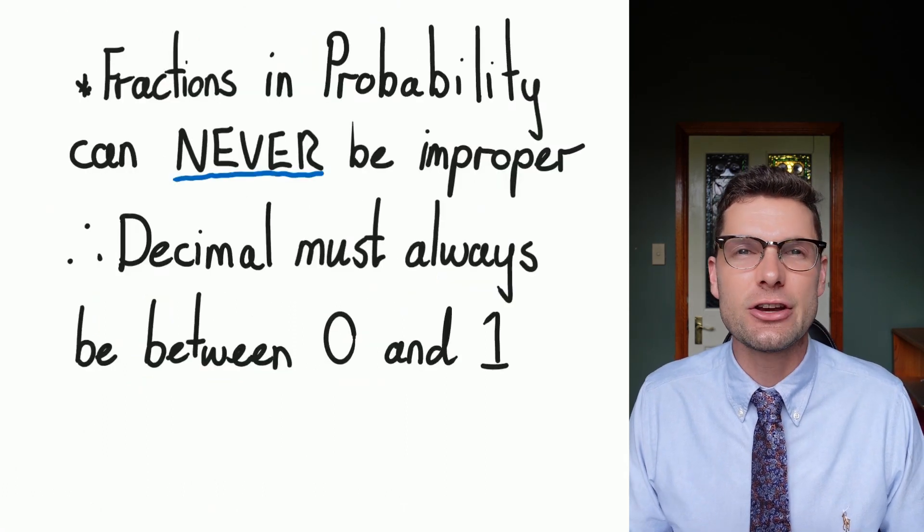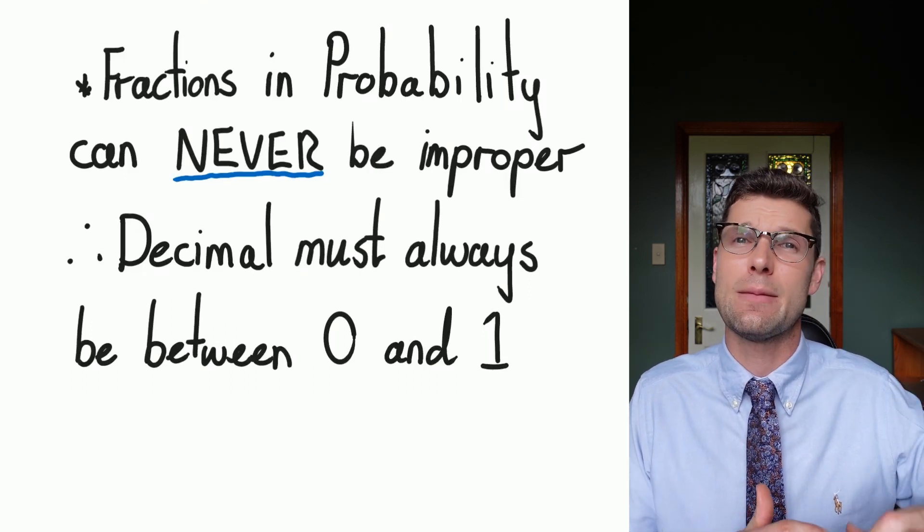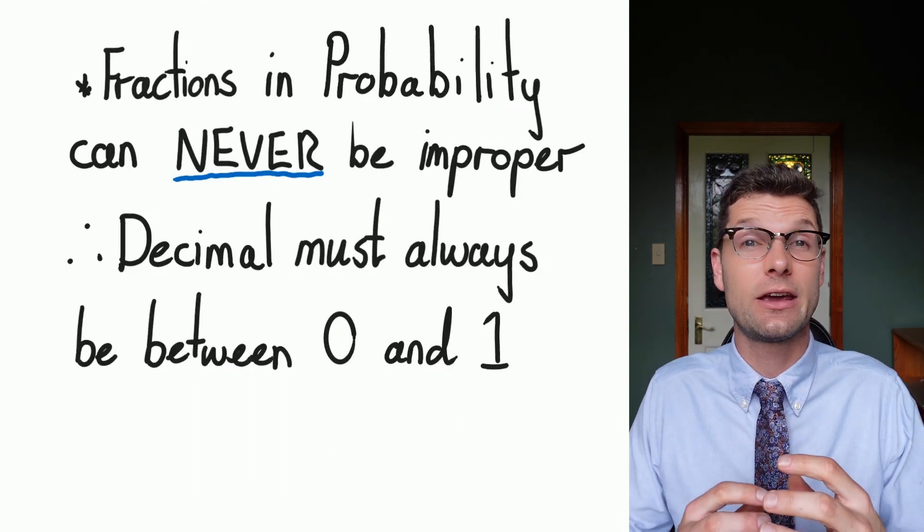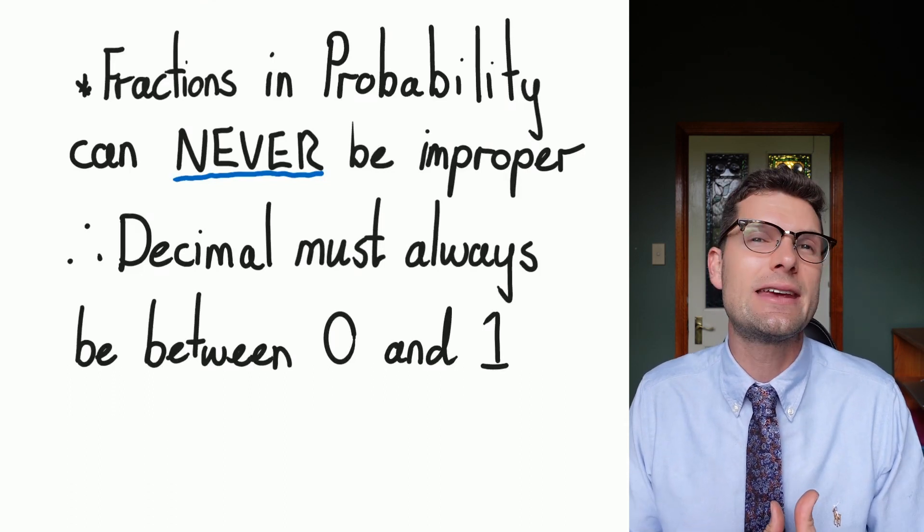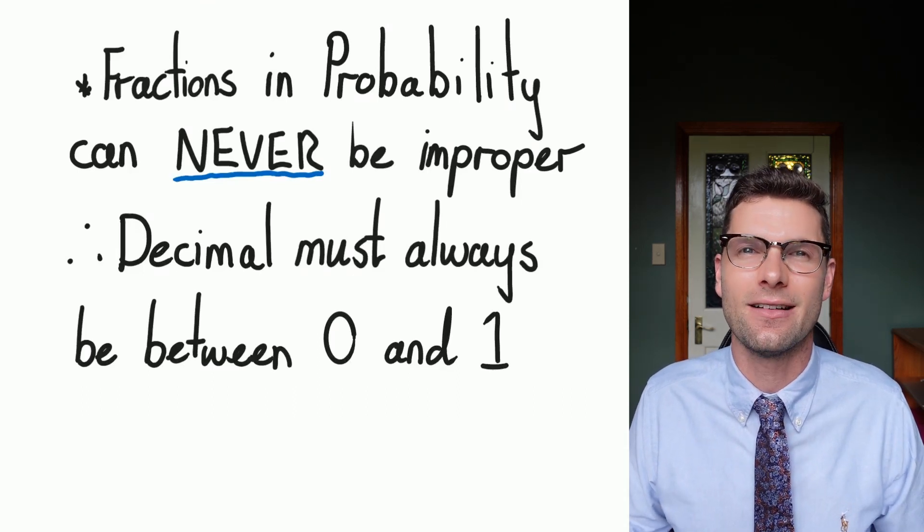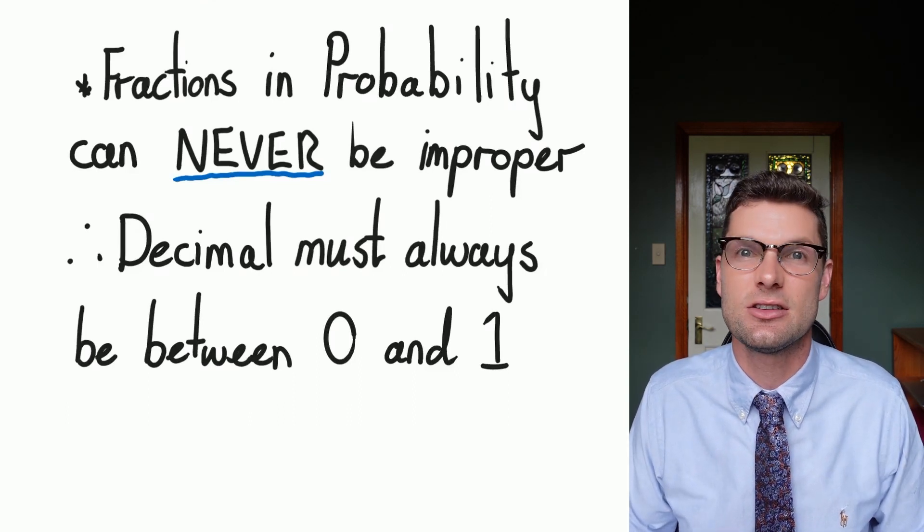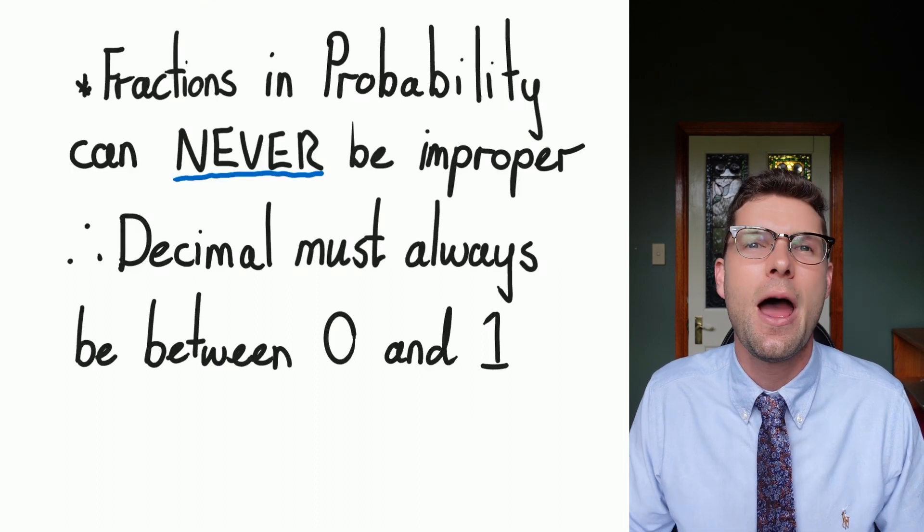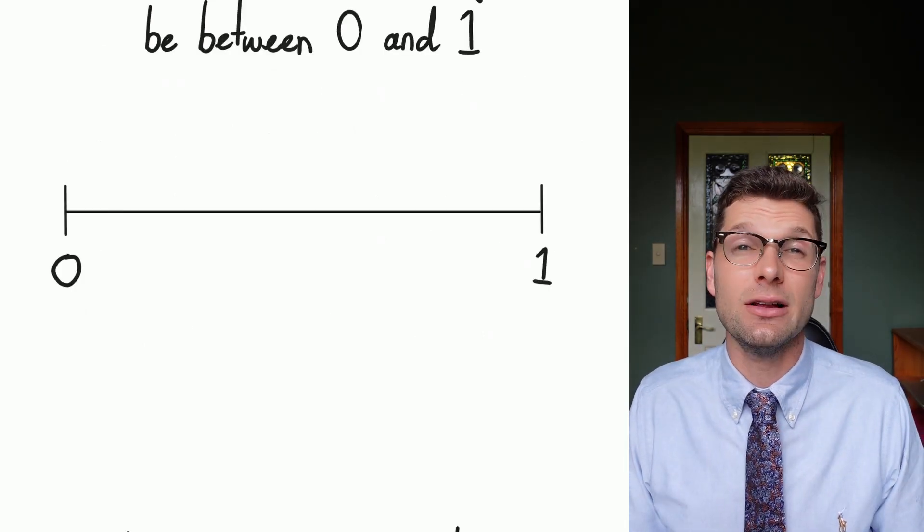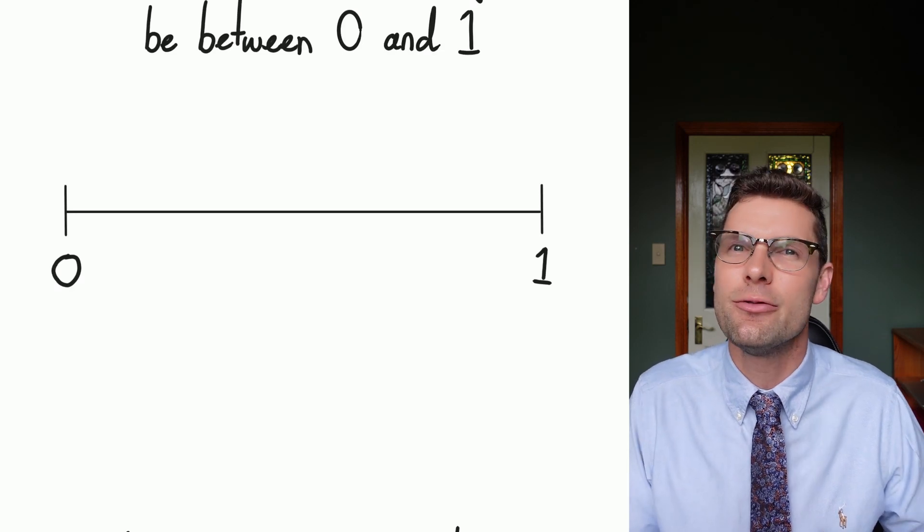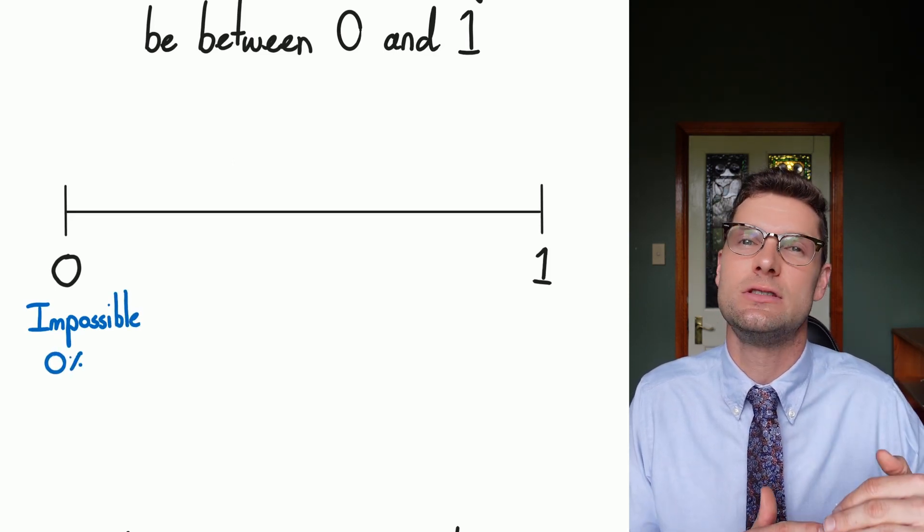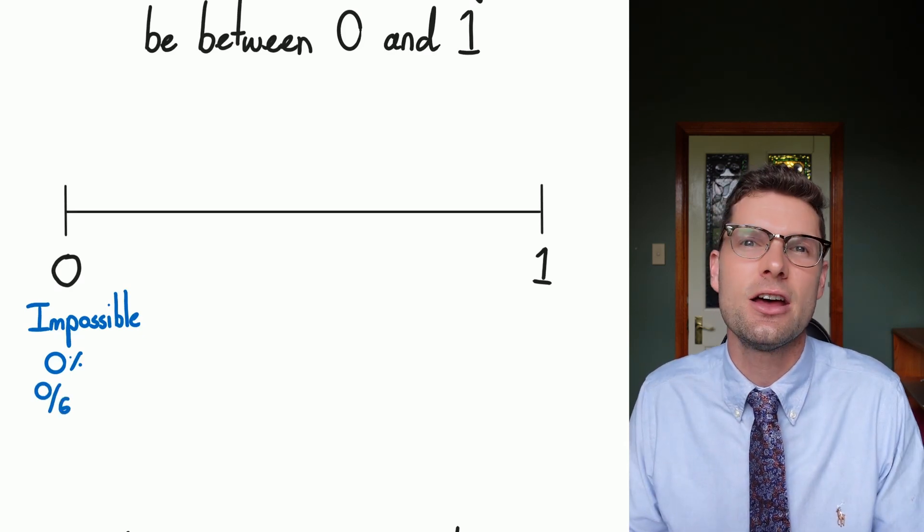So one really important note is that fractions in probability can never be improper. So there can't be more favorable outcomes than what actually could happen. That doesn't make any sense. So that means when we convert these fractions into decimals or into percentages, we cannot have a decimal that's greater than one. And we can't have more than 100% chance of something happening. You might hear someone be like, oh, 110% chance this happens. This team's going to win 110% sure. But that's not actually true. We can only go up to 100% in these examples.